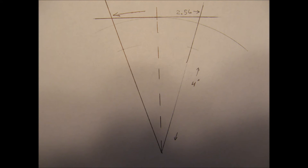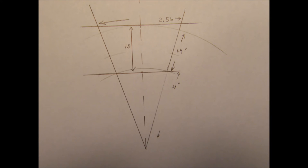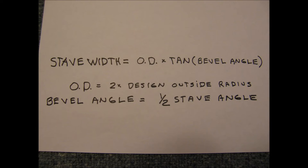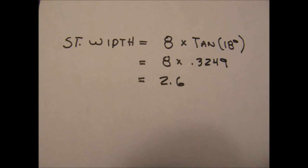If you'd like to measure the design wall thickness, draw a line parallel to the tangent offset by the stave thickness of 1.5 inches. This line will intersect the radii; the design wall thickness is the length along the radii between the arc and this intersection — in this case 1.4 inches. For the algebraically inclined, the stave width equals the outside diameter times the tangent of the bevel angle, where the bevel angle is half the stave angle. For the base: diameter 8 inches, bevel angle 18 degrees, so 8 times tan(18°) = 8 times 0.3249 = 2.6 inches, which compares well with the graphical result of 2.56.